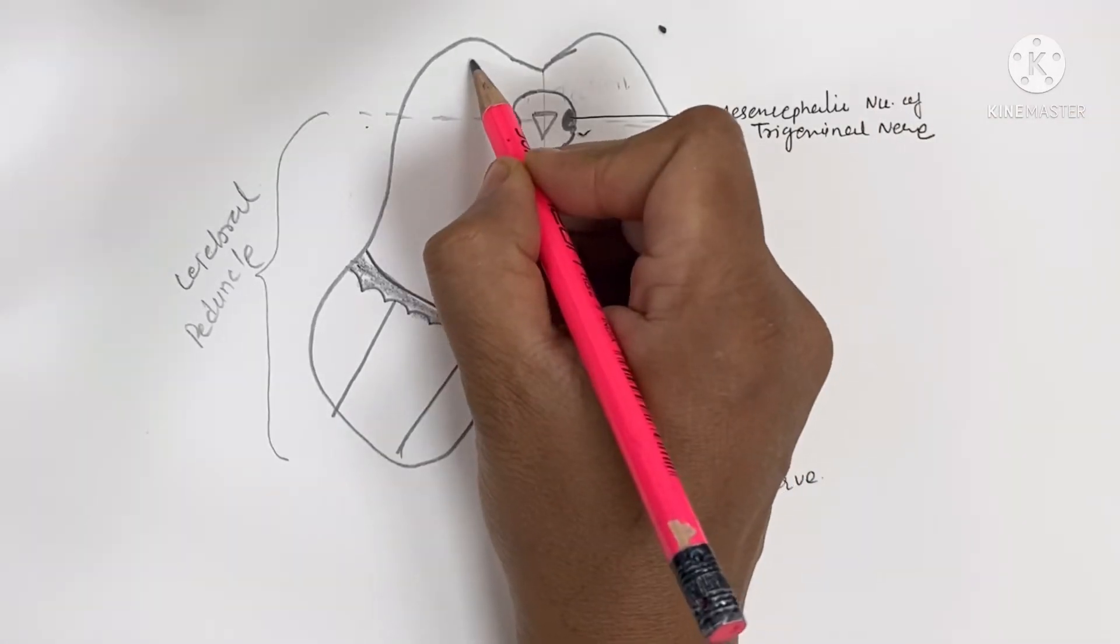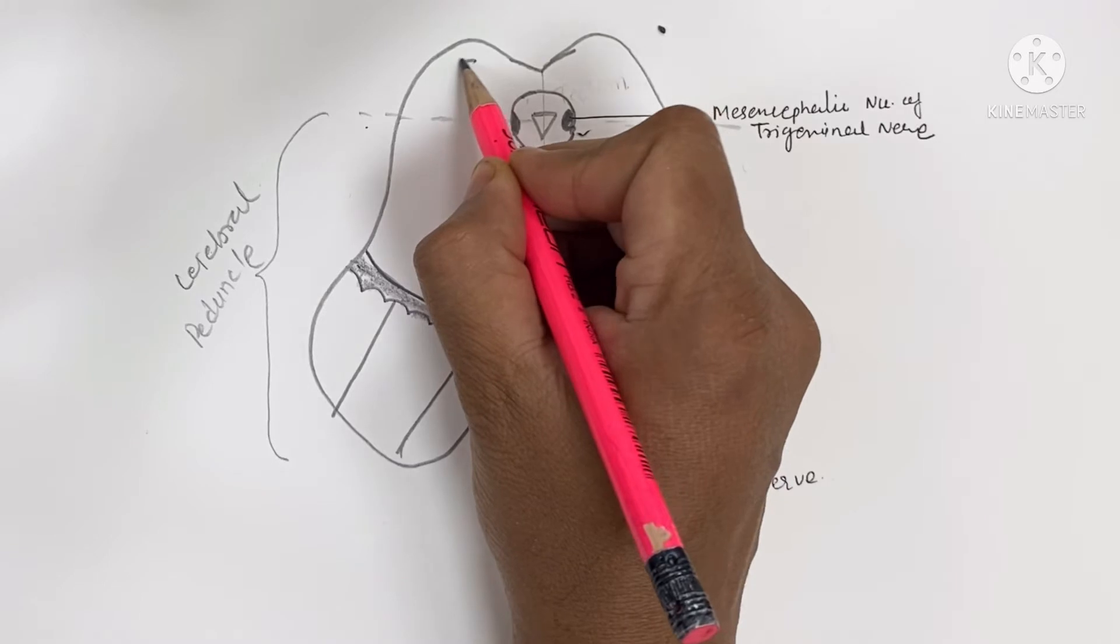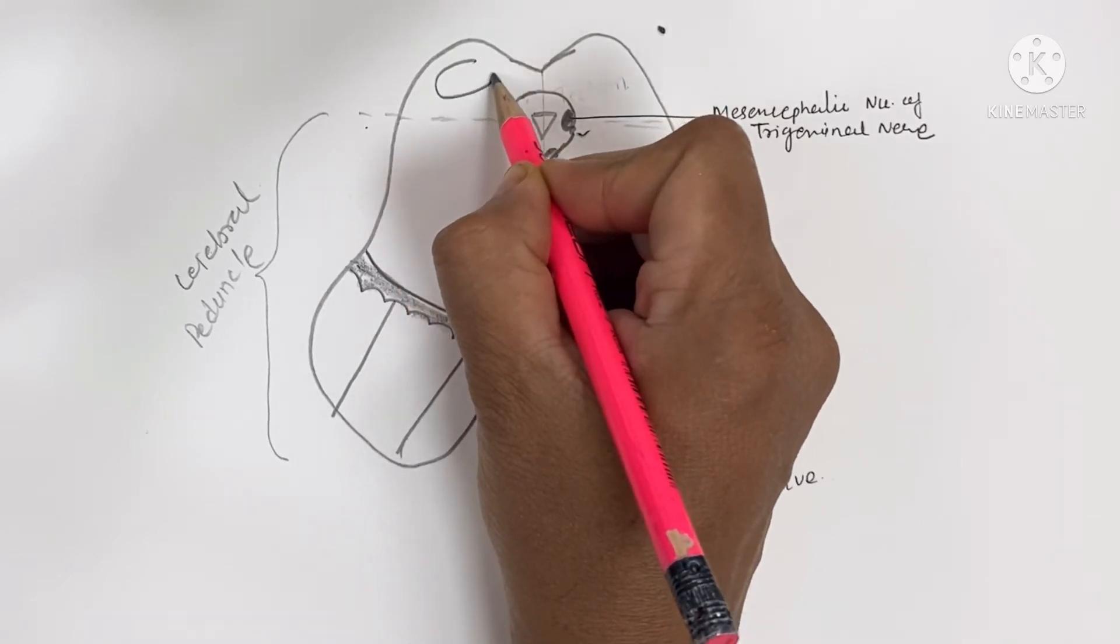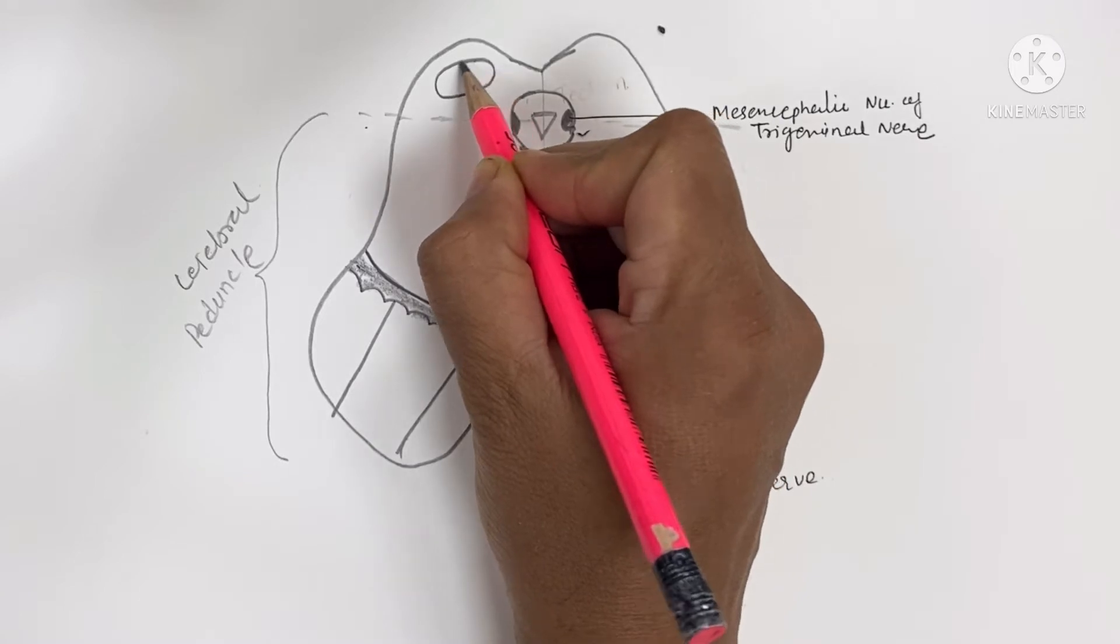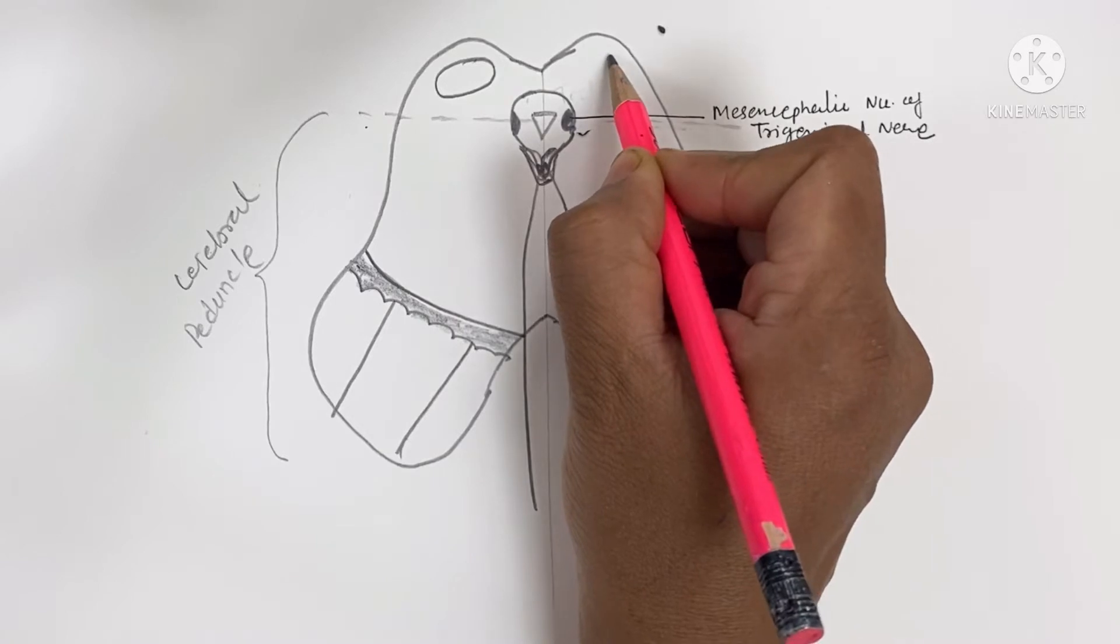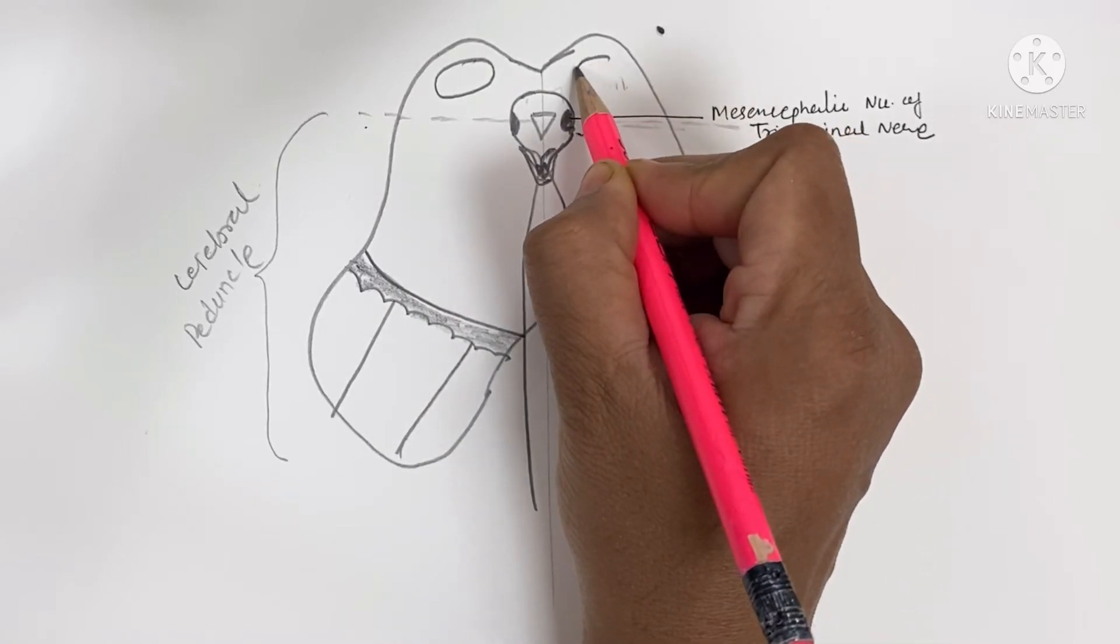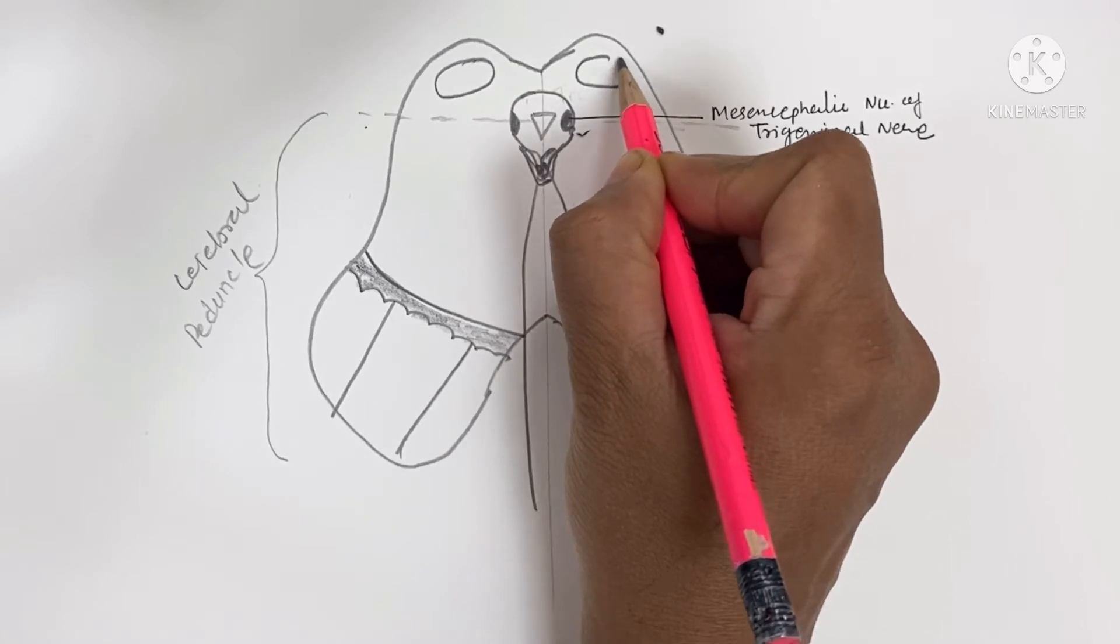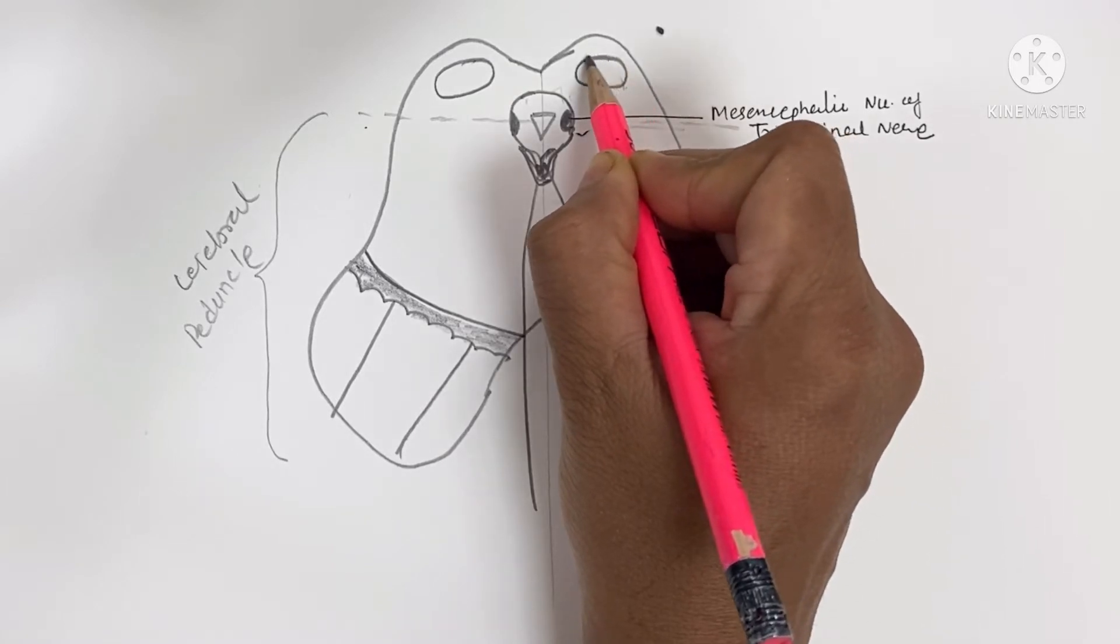Superior colliculus is a mass formed by alternating laminae of white and gray matter. Superior colliculus is related to visual reflex, so it is related to light and to the lateral geniculate body.